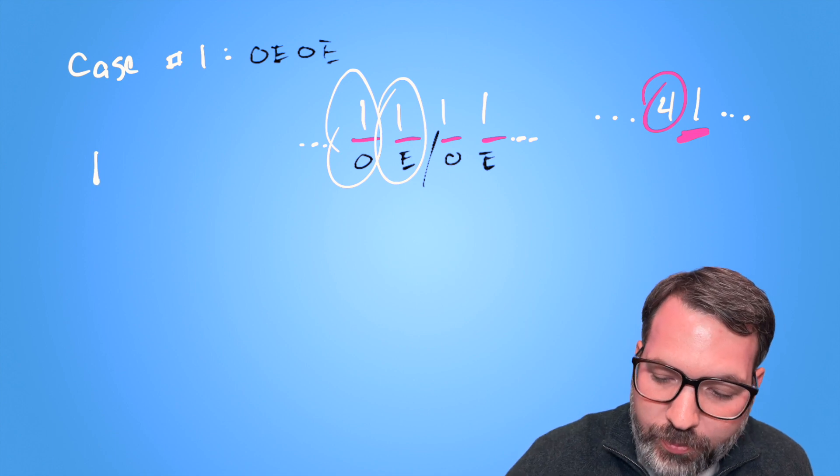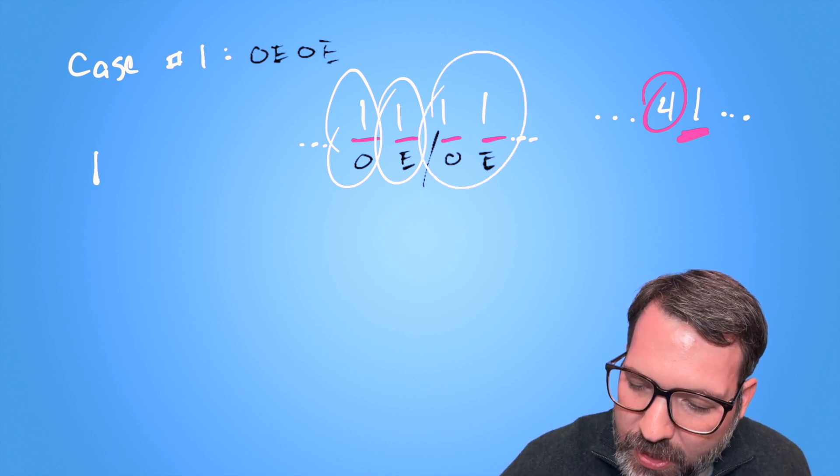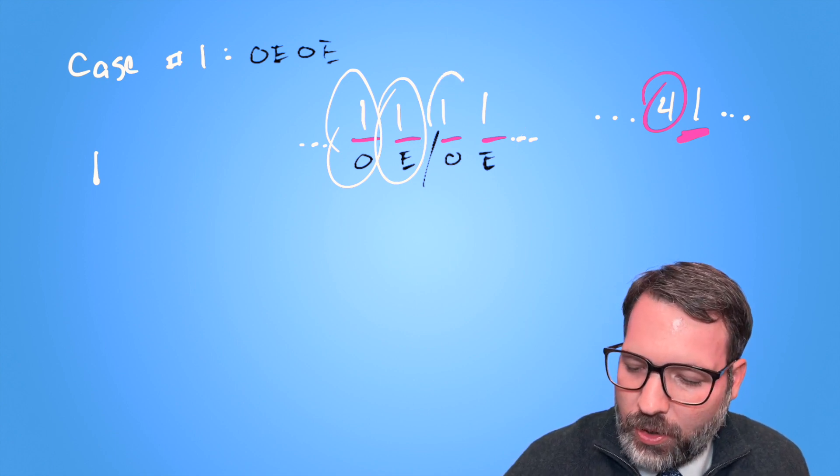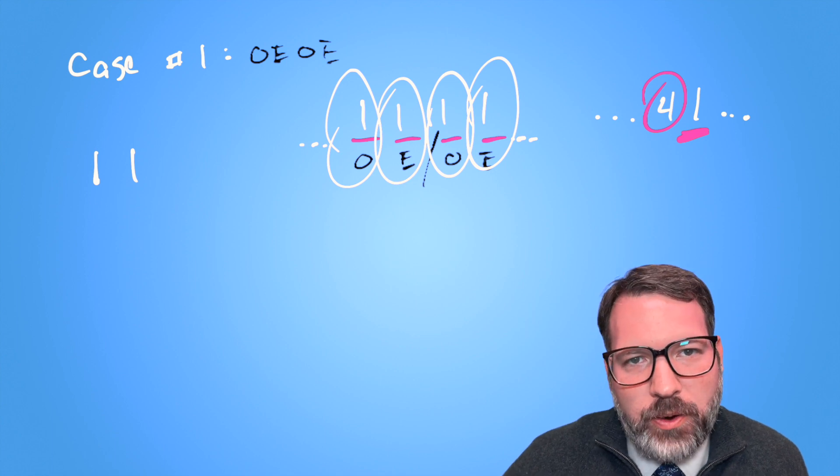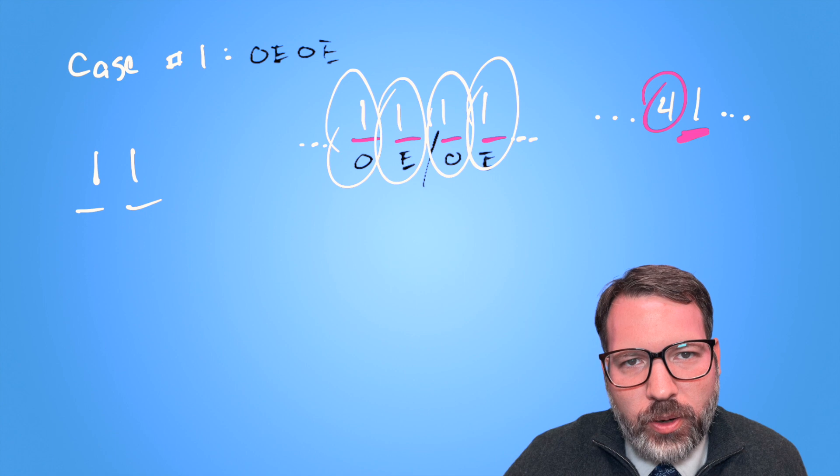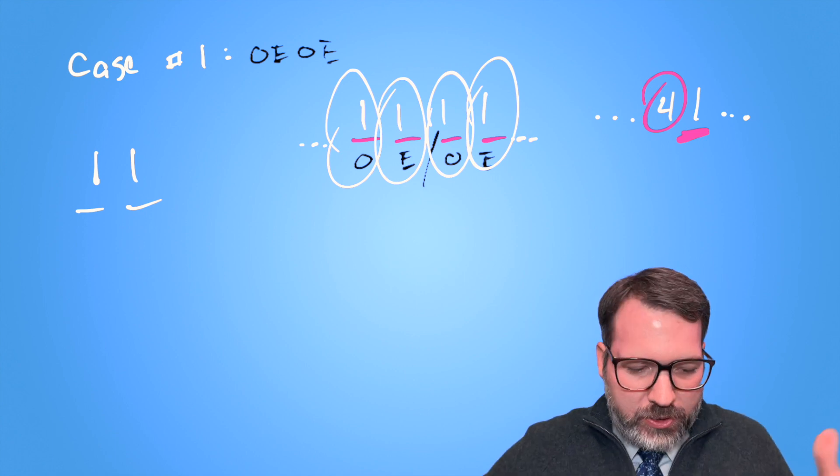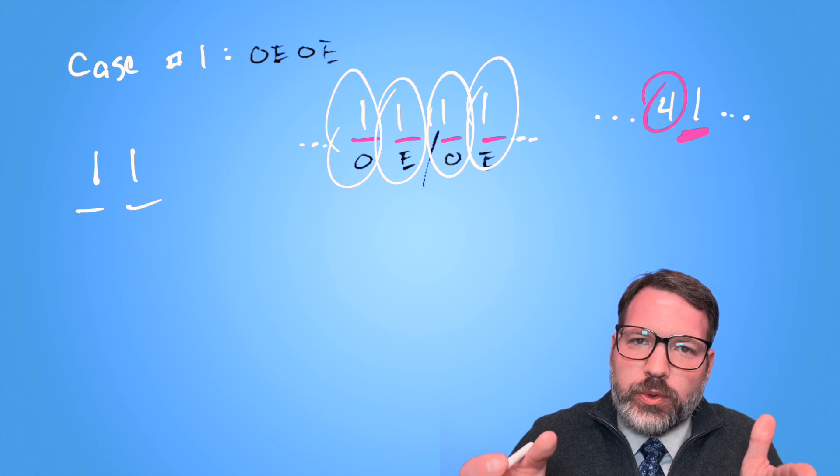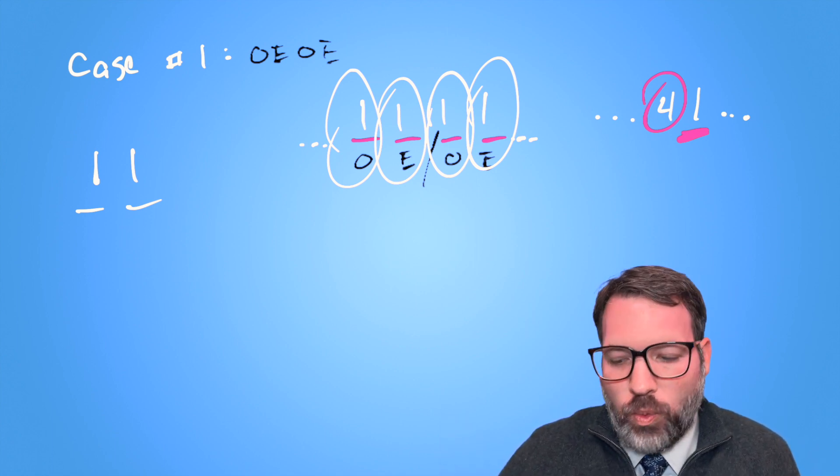So the previous term in this sequence would have had one, one. But then this O, E pair would be describing the same thing, one, one. And so the previous term in the sequence must have had another one after that one. But if we had had these two ones in a row in the previous term, we wouldn't have described it as one, one, one, one. We're supposed to collapse our descriptions. We're supposed to say how many digits in a row there are. We would have called this two ones.